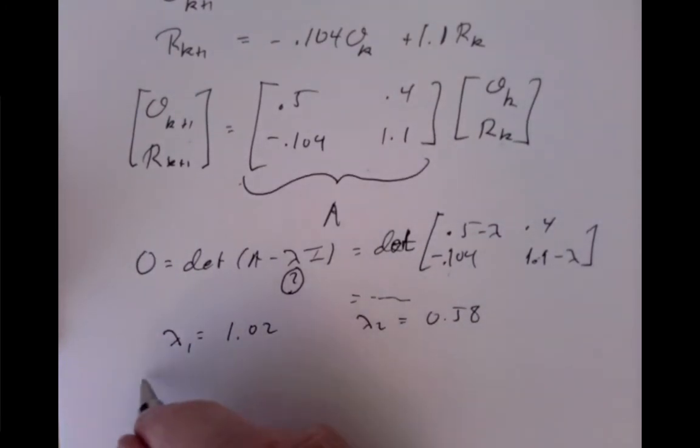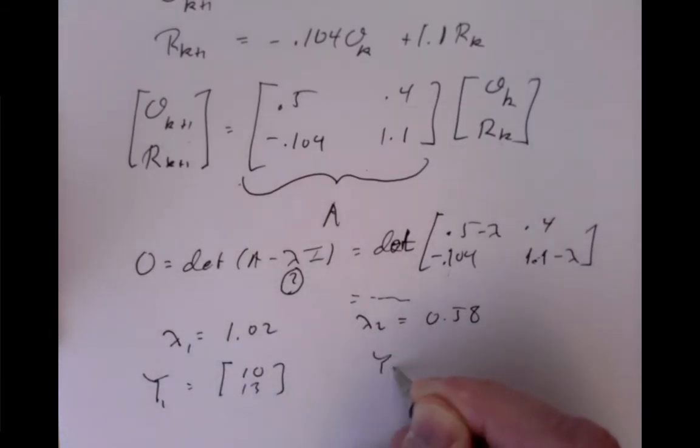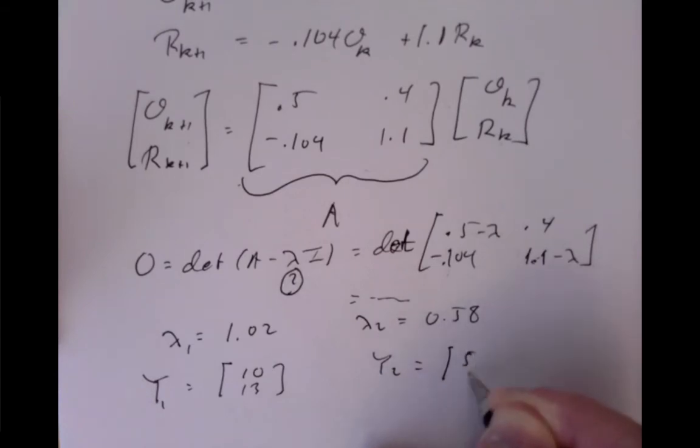They have corresponding eigenvectors, let's call them y_1 is [10, 13], and y_2 is [5, 1].